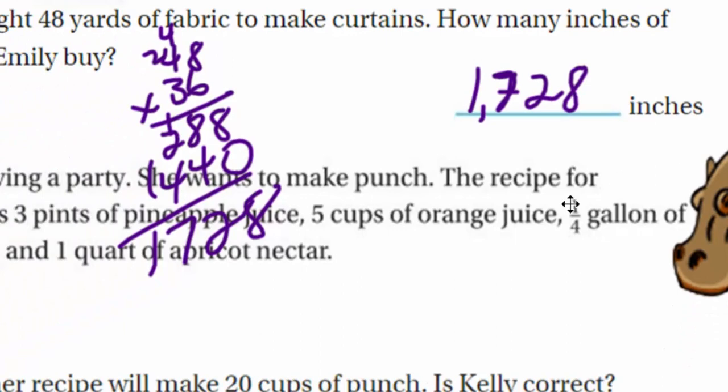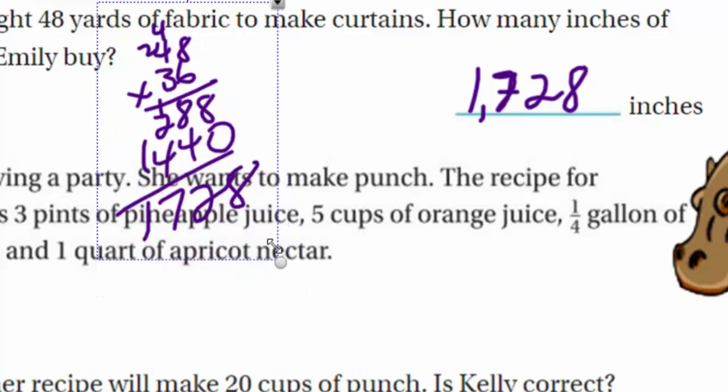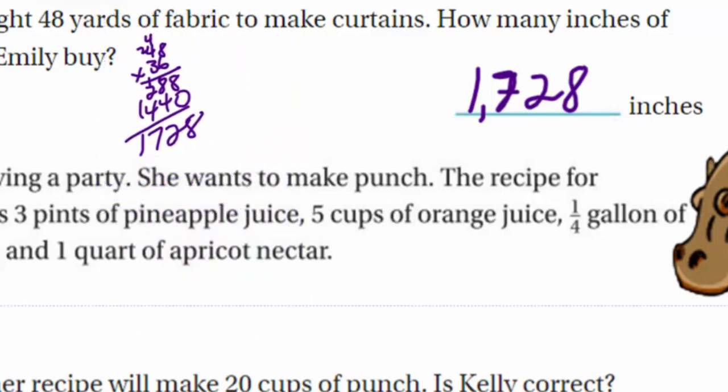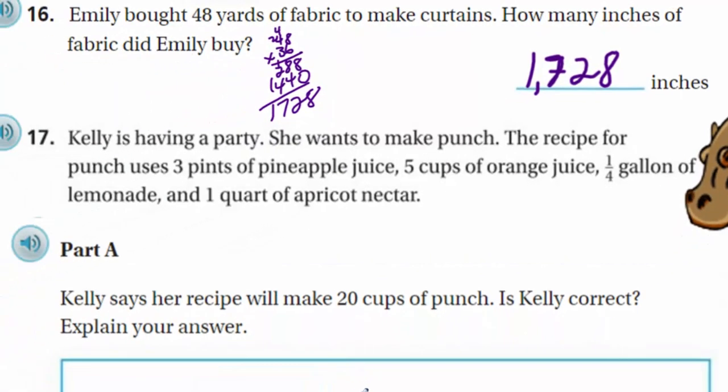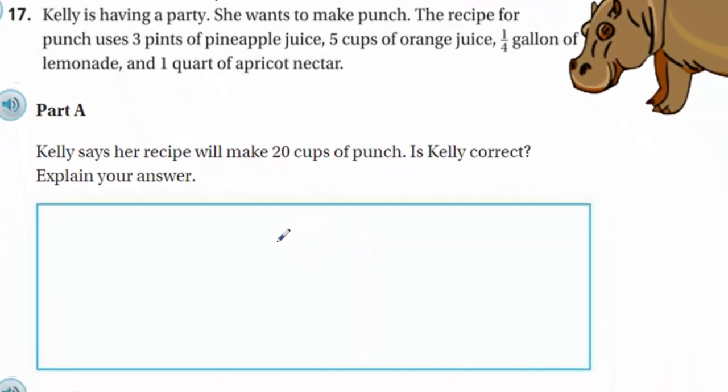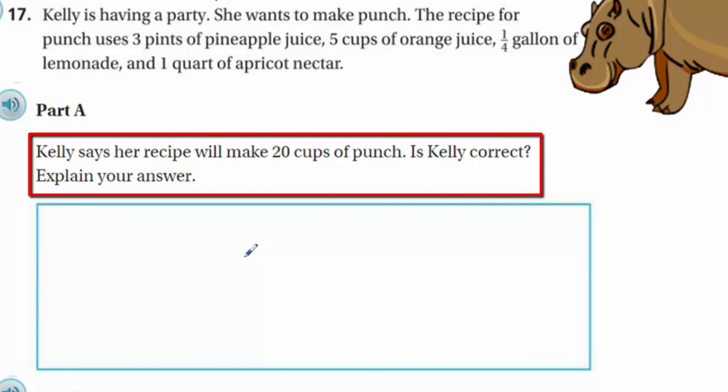Alright. So, excuse me, but you're in my way now. So, let me do this. So, I can keep my work there. Grew it up together. Shrink! Ah! I'm shrinking! Okay. Come on, Mr. Warren. Alright, let's go to the next problem. Mrs. Kelly is having a party. She wants to make punch. The recipe for punch uses 3 pints of pineapple juice, 5 cups of orange juice, 1 quarter gallon of lemonade, and 1 quart of apricot nectar. Could they make any other different units? My goodness. I have pints. I have cups. I have a gallon. And I have a quart. Okay. Alright. Now, Mrs. Kelly says her recipe will make 20 cups of punch. Is Kelly correct? Explain your answer.